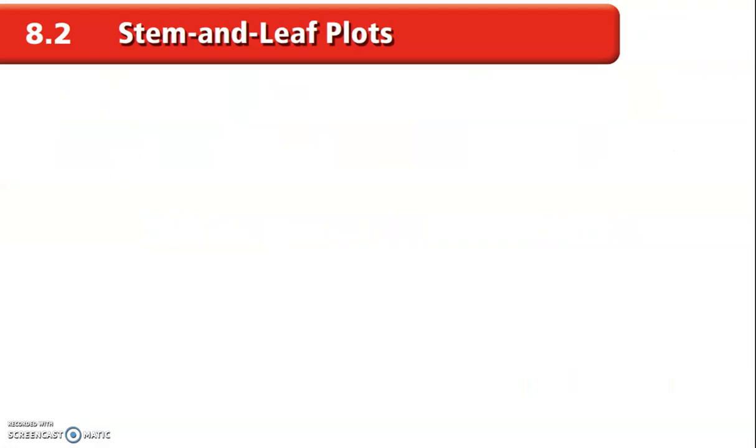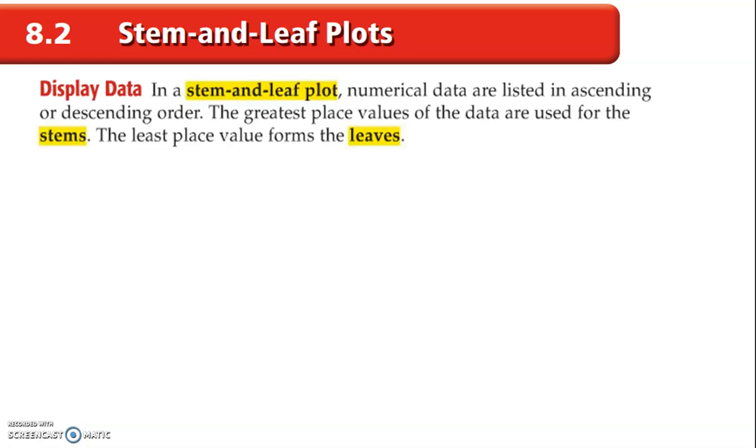All right, stem and leaf plots. You've seen some of these before. We're going to add in a little bit of information that you might not have seen. So in a stem and leaf plot, we've got numerical data. They're listed in ascending or descending order, and you'll see today why it's descending. Now, it says the greatest place values, it's important that you note that this is plural, values of the data are used for the stems. The least place value, that's only the last place, forms the leaves.